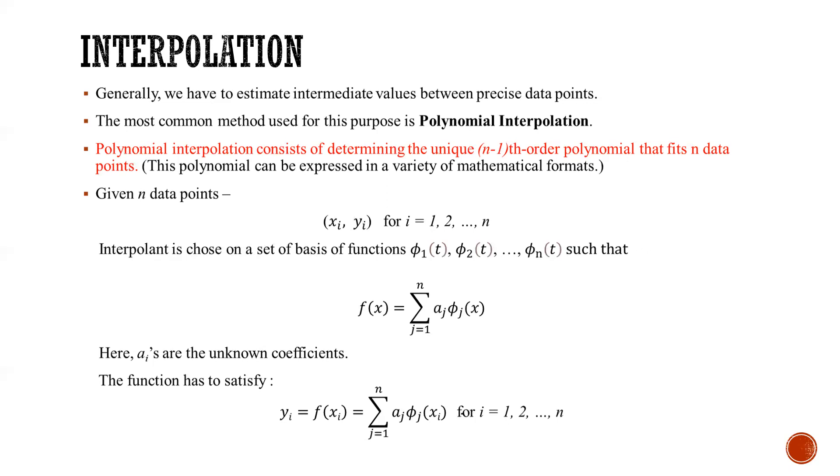Now we know that these points satisfy this polynomial f(x). So we have yi equals f(xi) equals summation of aj φj(xi) for j equals 1 to n.